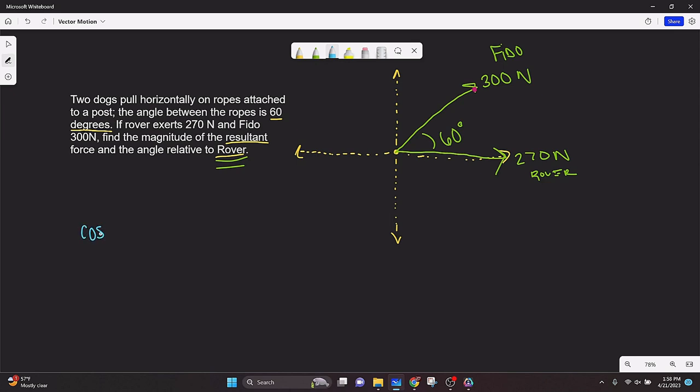So cosine of 60 degrees equals the adjacent, which we don't know, x. We don't know this component right here. And then, but we do know 300, which is the hypotenuse. So x over 300, multiply both sides by 300. We get 300 cosine of 60 equals our x component. And that is 150.